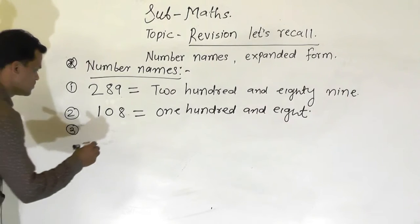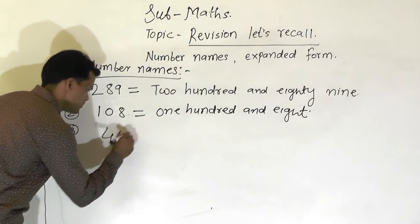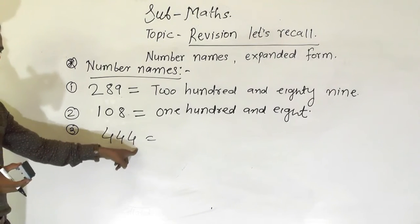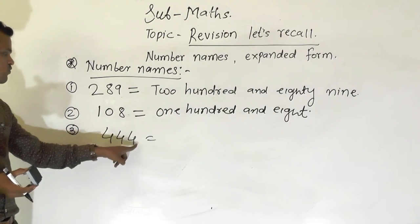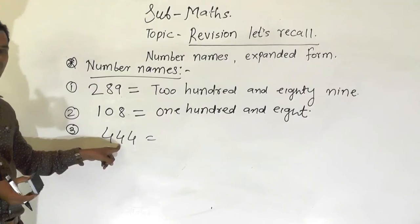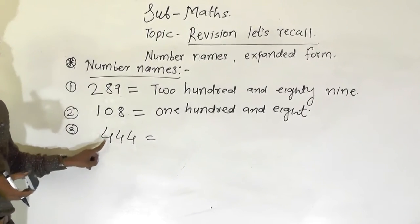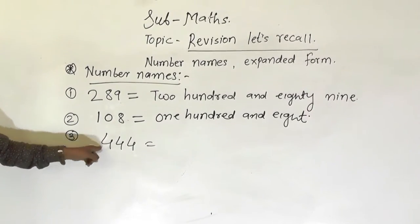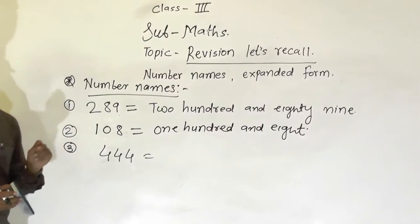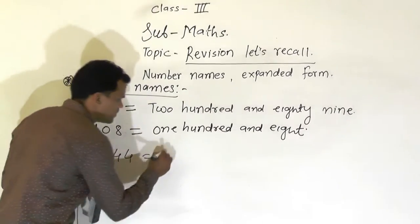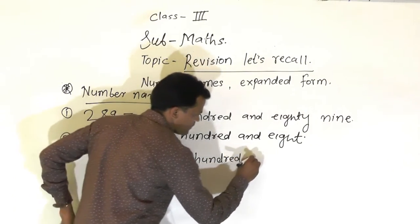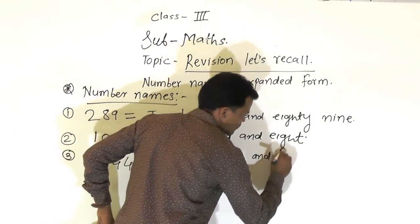The third number is 4444. Identify this number. 4 comes at the ones place, so 4 ones means 4. Here 4 comes at the tens place, so 4 tens means 40. Here 4 comes at the hundreds place, so 400. This number is 4444. Write the spelling of this number: 4000 and 400 and 44.